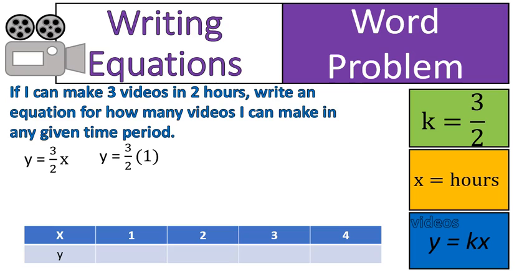That gives me as a decimal 1.5 because 3 over 2 as a decimal is 1.5. 1.5 is a better number for first off fitting in this table but also it makes more sense. How many videos can I make? 1.5 videos or one and a half videos makes more sense than writing it as an improper fraction.